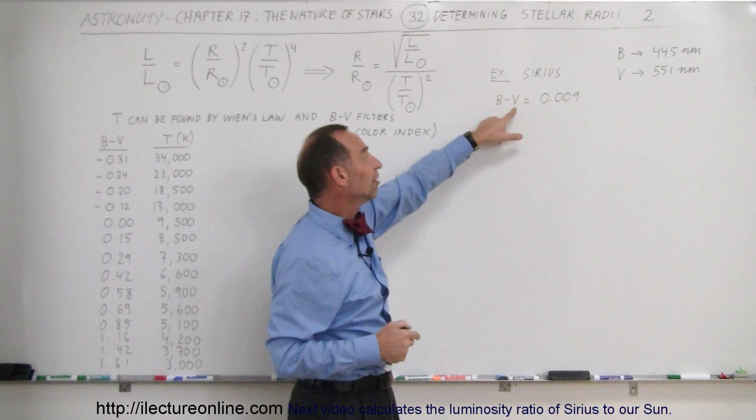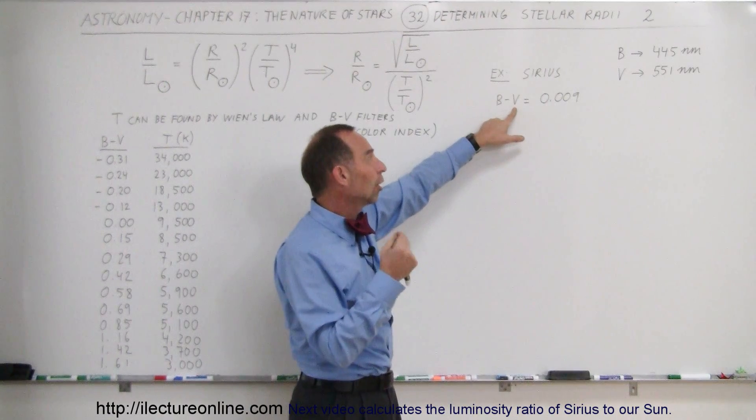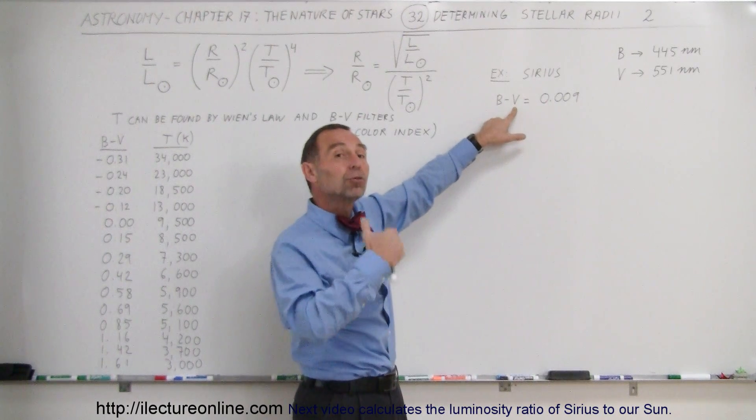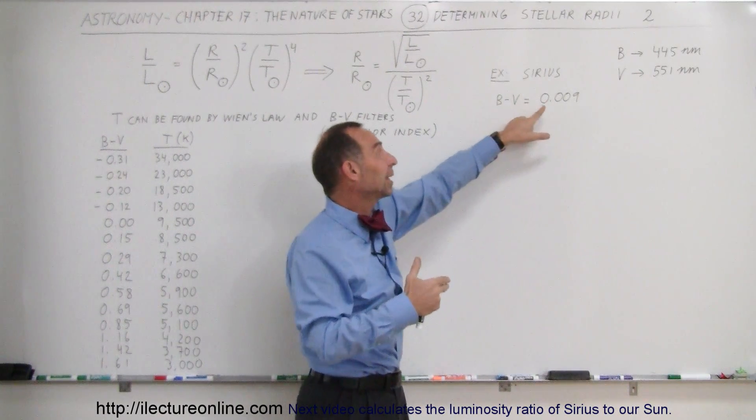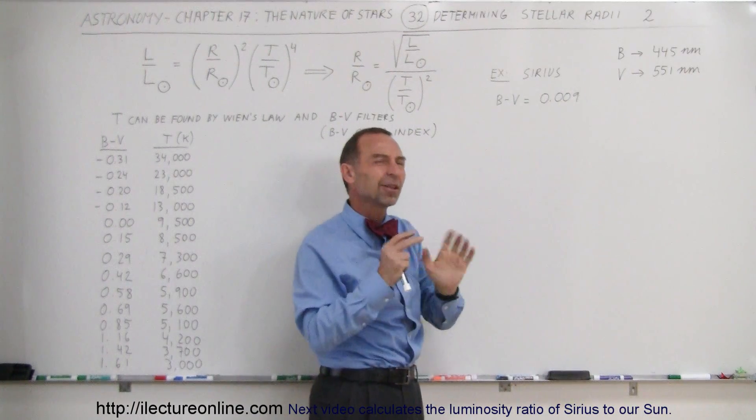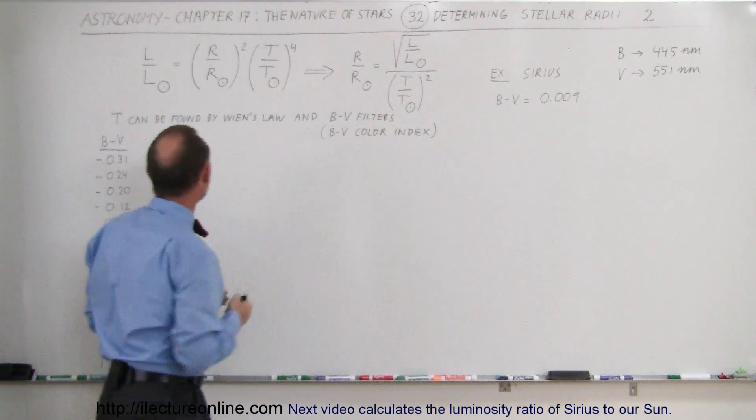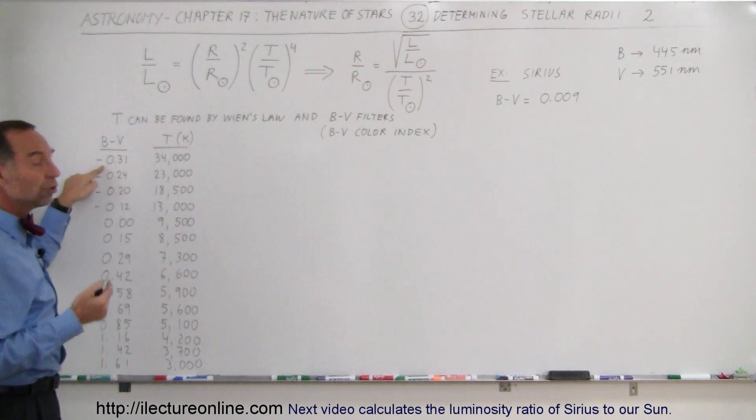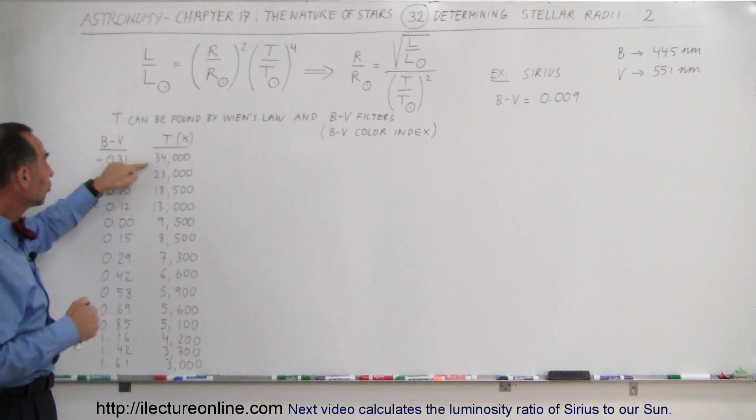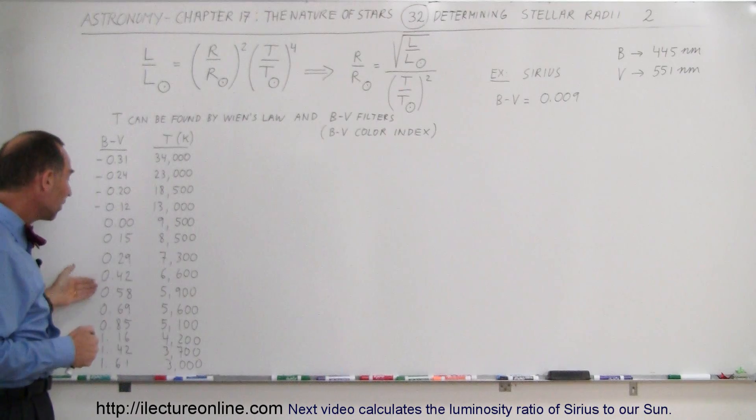But if the visible light is a smaller number, that means it looks brighter in visible light, so we get a positive number there. Yes, it's a little bit confusing. But basically, what it means, and here we have a table, is the smaller the number into the negative, the hotter the star, the bigger number and into the positive, the cooler the star.